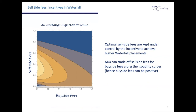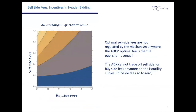You can clearly see this from the level curves of the expected revenue function of the ad exchange, where lighter colors represent higher revenues. In header bidding, however, ad exchanges are always better off charging no fees on the buy side and obtaining all revenue from the sell side. Because ad exchanges no longer compete for a higher position in the waterfall, they have no incentive to keep their fees under control, extracting larger and larger amounts of the publisher's surplus.